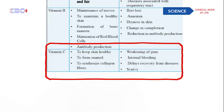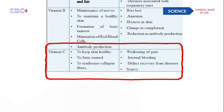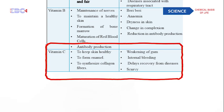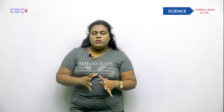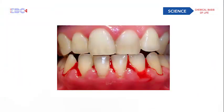The third vitamin is vitamin C. Its main uses are to keep our skin healthy, to form enamel — the thin outer covering of the tooth — and to synthesize collagen fibers. The deficiency symptoms include weakening of the gums and internal bleeding, which can be seen through the images provided.